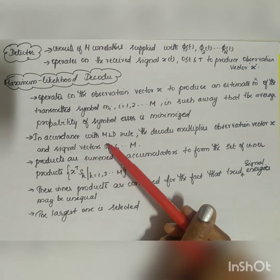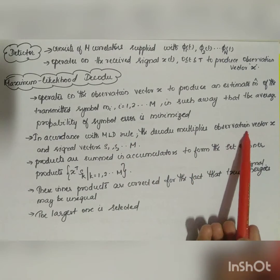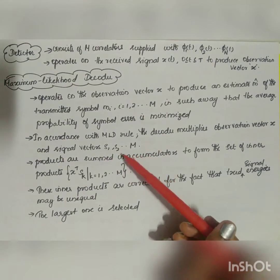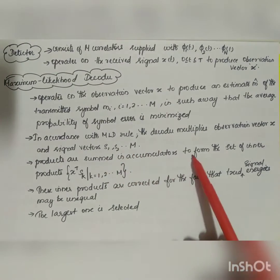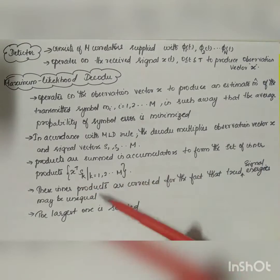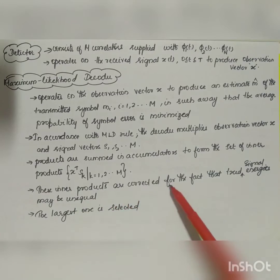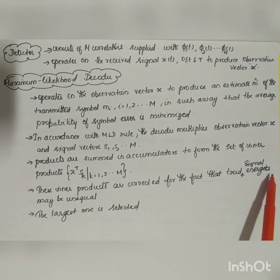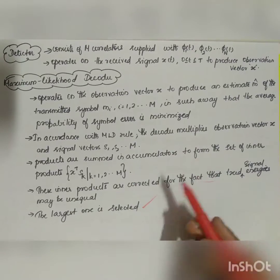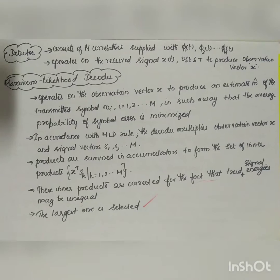In accordance with the maximum likelihood decision rule, the decoder multiplies the observation vector x and the signal vectors s1, s2, up to sm, and the products are summed and accumulated to form the set of inner products x·sk. These inner products are corrected for the fact that transmitted signal energies may be unequal, and the largest value is selected as the estimate m-cap.